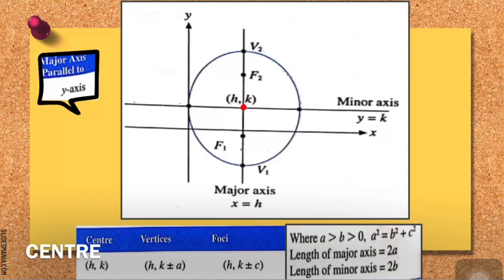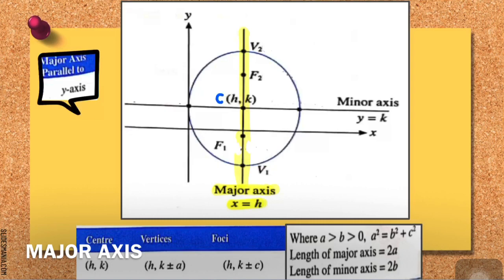Let's start off with the middle point of your ellipse, which is your center. The coordinate of the center is (h, k). This center is exactly on your major axis.